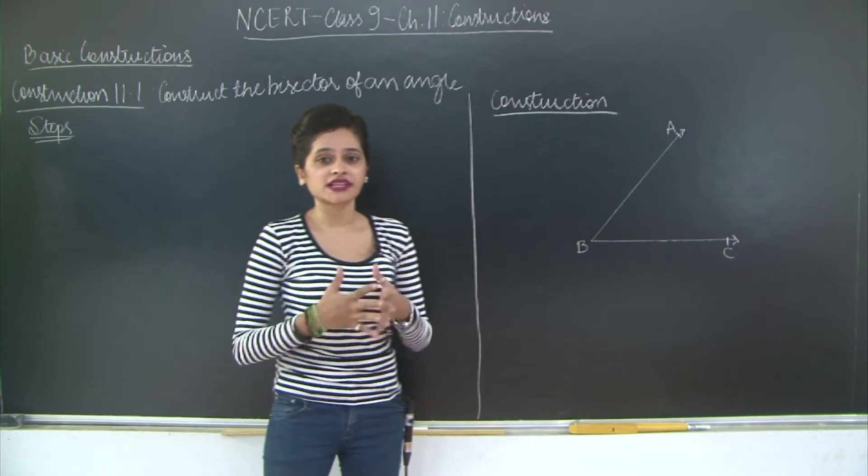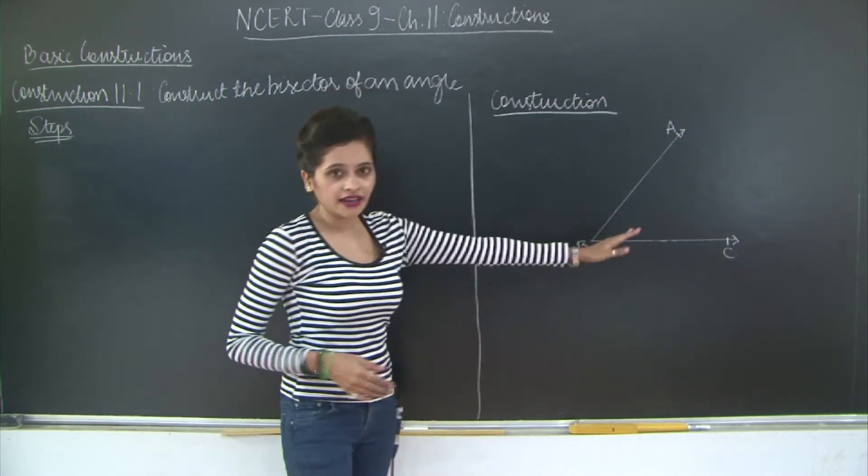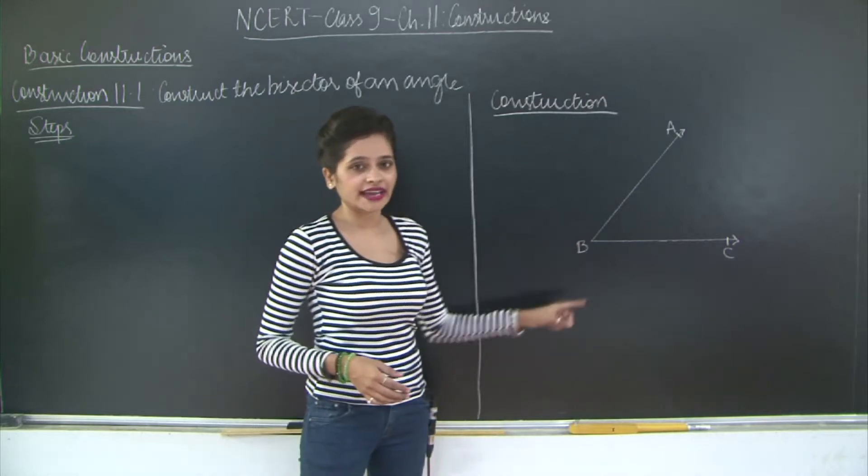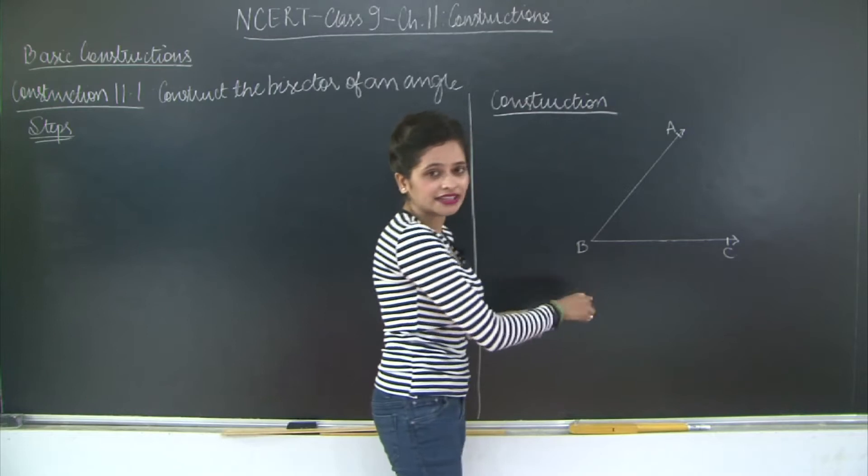So given the angle ABC we need to draw the angle bisector. First of all what is an angle bisector? An angle bisector is a ray from one vertex of the angle that is the center vertex of the angle. Now here the center vertex of the angle is B.